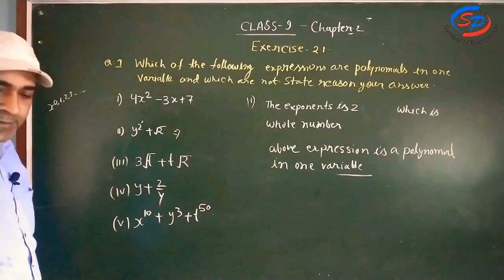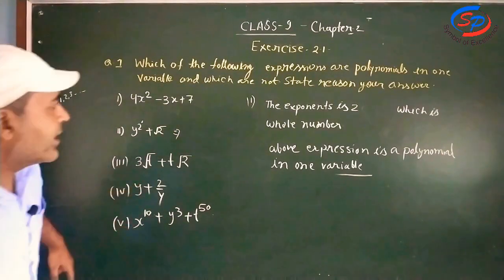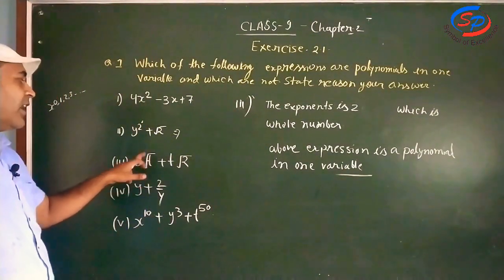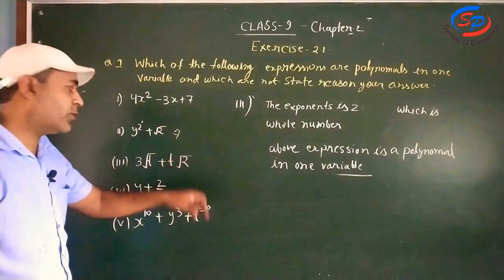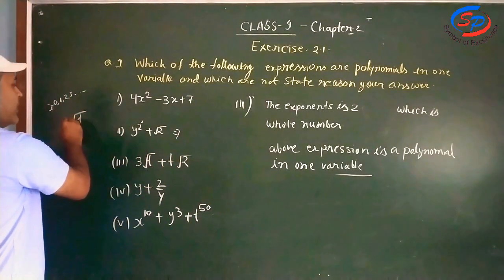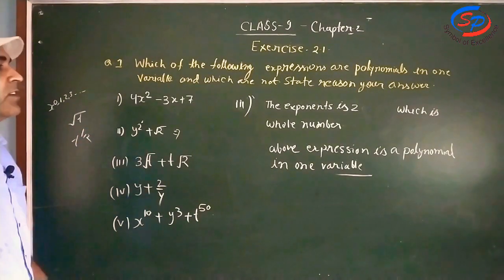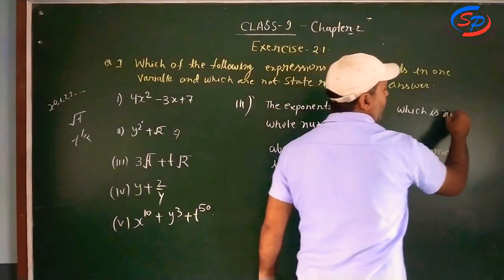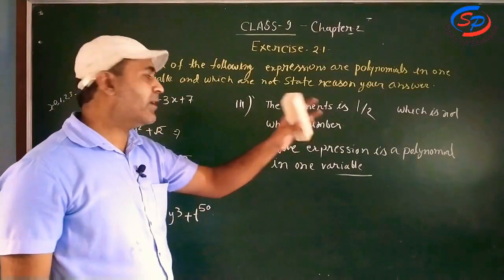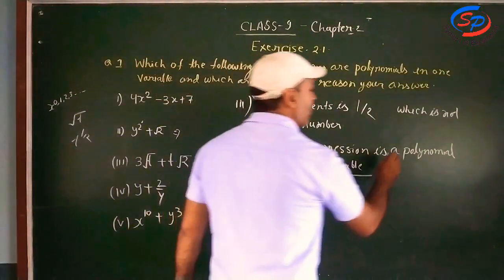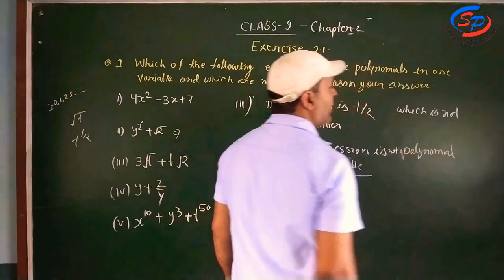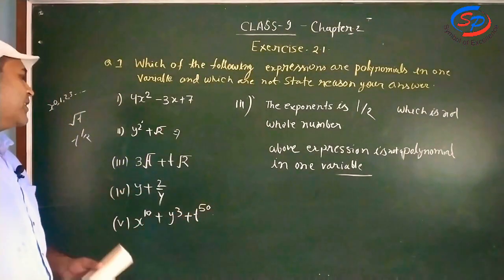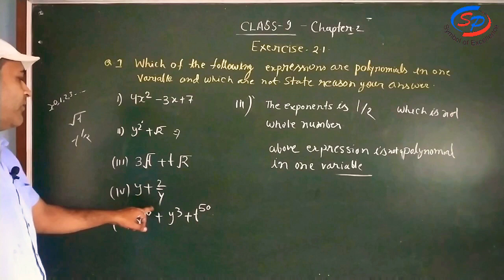Now let's see number 3. Number 3 is: t to the power root 2. If we look at the power on t, it is under root 2, which means the power on t is 1/2. So the exponent is 1/2, which is not a whole number.